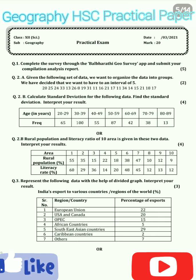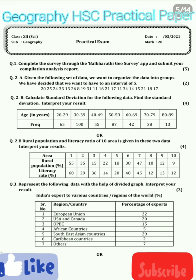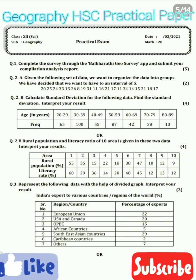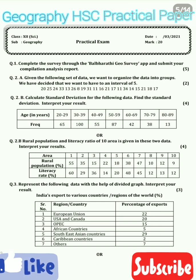There is no choice for your first question — the Jio Survey app practical is compulsory and you will get a total of 5 marks for it. Now, question number 2 is divided into two sections: Section A and Section B. Section A carries a total of two marks.